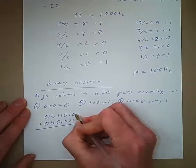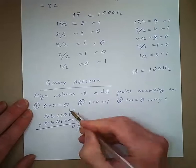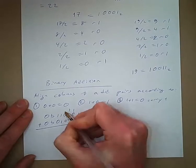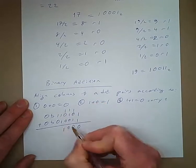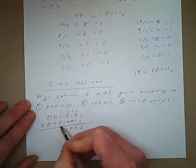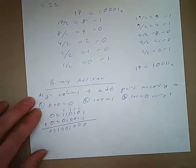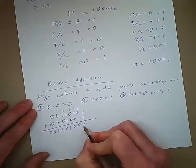1 plus 1 gives us a 0, and we carry a 1. 1 and 1 is 0, and carry a 1. 1 and 1 is 0, carry a 1. 1 and 0 is 1. 1 and 1 is 0, carry a 1. 1 and 1 is 0, carry a 1.